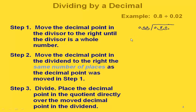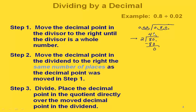Let's rewrite this so it's a little bit more clear. Now on the outside we just have a two, and on the inside we have eighty with the decimal point right there. Two goes into eight four times. Four times two is eight, giving us eighty, and eighty minus eighty is zero. In our final answer we need to put our decimal point in, and we need a zero as a placeholder in the ones place. So our quotient is actually forty.